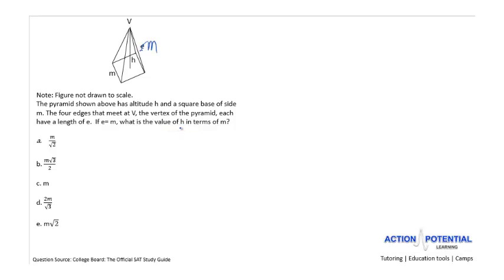We want to know what is the value of h in terms of m. The phrase 'h in terms of m' is the same as saying h is equal to something with m's involved. And that makes sense because if you look at the answer choices, you see that you do have m in the answer choices. So we're trying to find what h equals — that's the question.